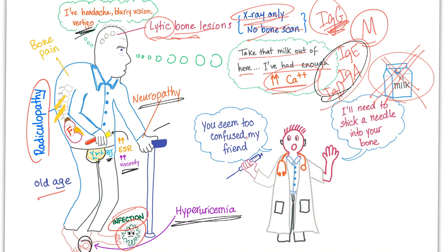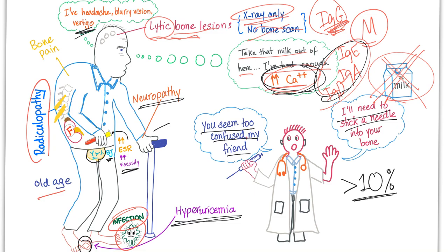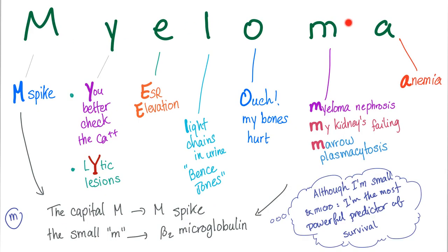Here comes the nice doctor: 'You seem too confused, my friend.' Of course he is confused because he has hypercalcemia. 'I'll need to stick a needle into your bone.' That's true — we need a bone marrow biopsy showing greater than 10% of the bone marrow being made of plasma cells, which are monoclonal. So we have this mnemonic — we just spelled out the word MYELOMA.